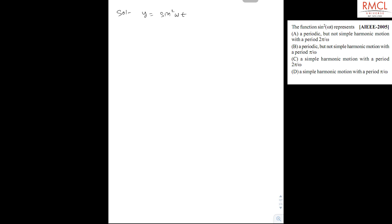And now if we plot the graph for sin square omega t, it will be like this. And it is pi by omega, it is 2 pi by omega, it is 3 pi by omega, this is 4 pi by omega, and so on.